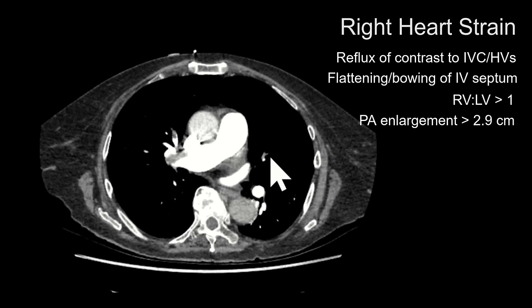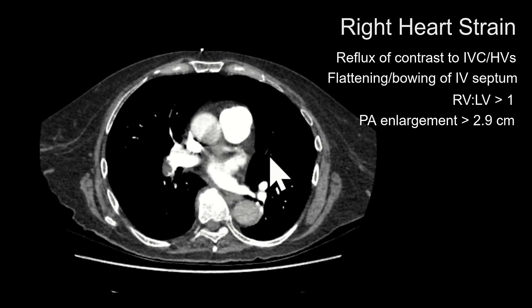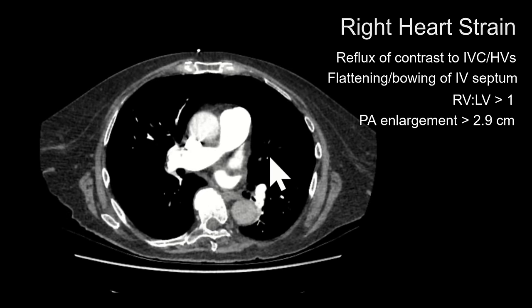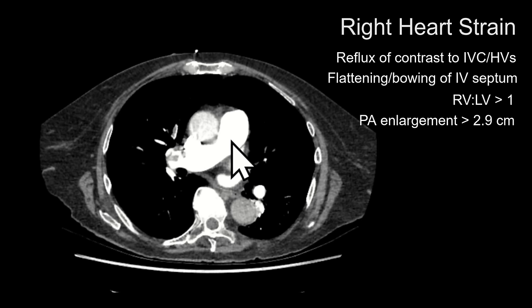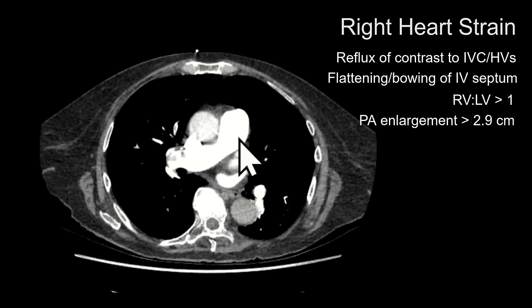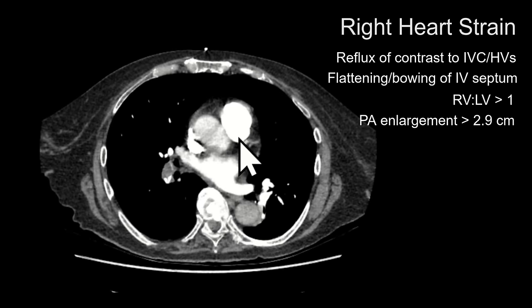You should be looking for these things in every case of PE. Some findings can be seen chronically — for example, enlargement of the PA over 2.9 to 3 centimeters alone indicates pulmonary hypertension — but if these are present in the clinical setting of significant PE they would be suggestive of acute right heart strain.